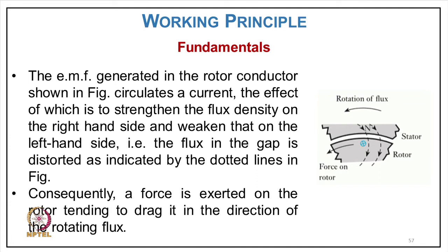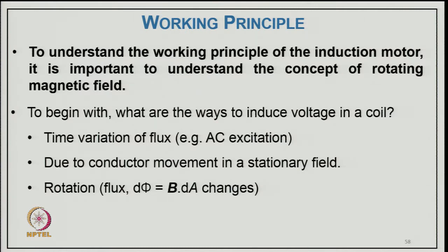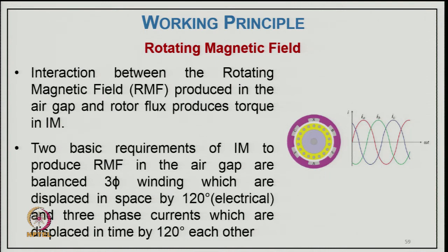The induced EMF generated in the rotor conductors circulates current; the resulting force is exerted on the rotor, creating a drag in the direction of the rotating magnetic field. To understand the working principle, it is important to understand the rotating magnetic field. Voltage is induced in a coil by time variation of flux (AC excitation) or conductor movement. The two basic requirements to produce a rotating magnetic field are: balanced three-phase windings displaced in space by 120 electrical degrees, and three-phase currents displaced in time by 120 degrees.